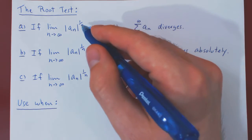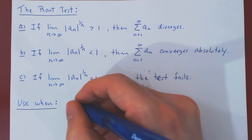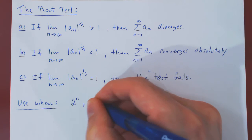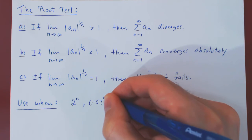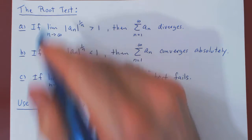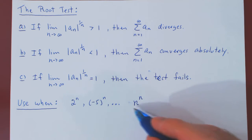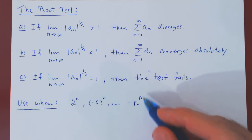And so, if you see a term in an that is raised to the nth power, such as an exponential function, 2 to the n, negative 5 to the n, and so forth, a good bet may be to use the root test. Same thing if you have a term such as n to the n, the root test may be applicable.